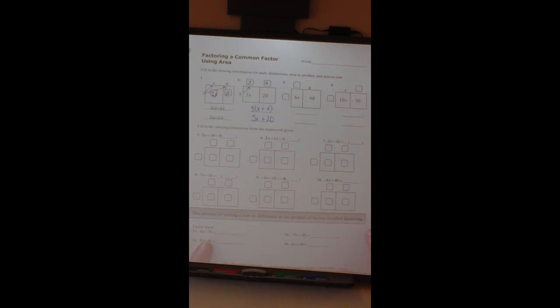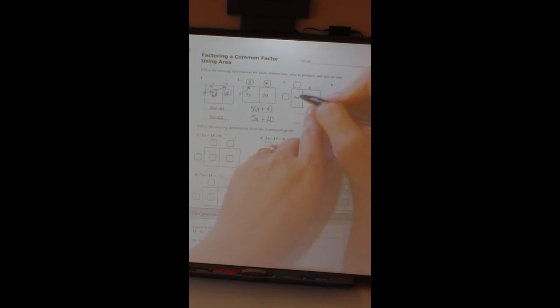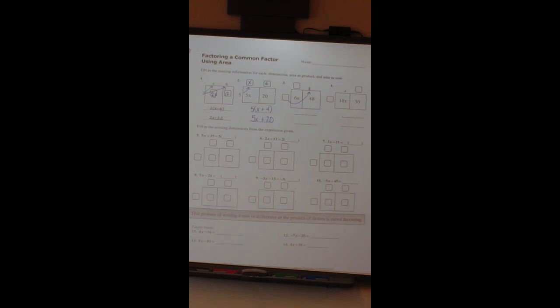I want you to do number 3 and number 4 on your own. Notice this says 6x, so we're trying to figure out what goes in here. But remember, to get 48, whatever times 8 was 48. So you want to make sure this number, when you multiply by 8, is going to give you 48. And then make sure you write the distribution at the bottom.